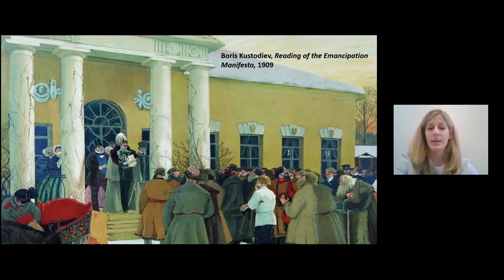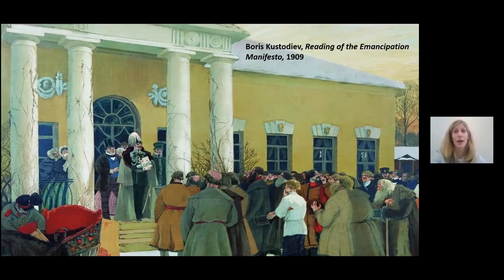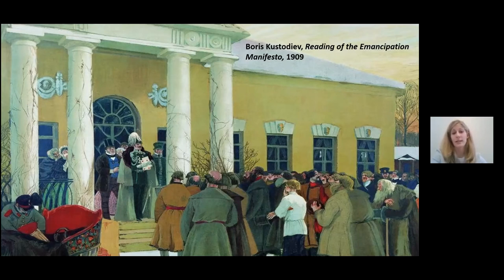Two years later, in 1863, the government issued charters that enabled estate owners to allow peasants to purchase household allocations of land. In exchange for the permanent use of the land, however, the peasants were required to make redemption payments to estate owners over the course of 49 years. The fiscal burden of these obligations effectively bound the peasants to the land, much as sharecropping in the United States kept freed people from leaving the South. Peasants actually made these redemption payments until the 1905 revolution, when Tsar Nicholas II canceled the outstanding payments and permitted peasants to move freely about the country.